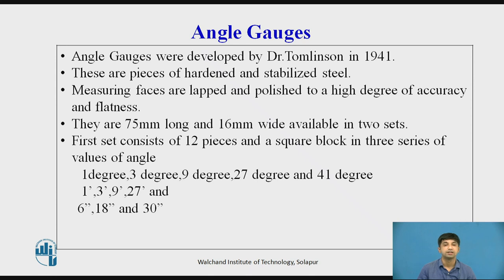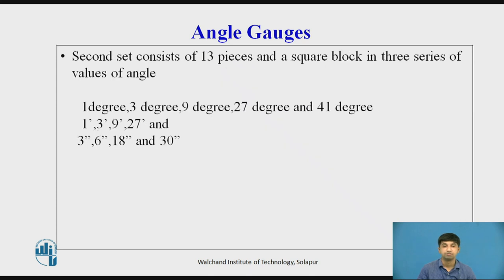Second set consists of 13 pieces and a square block in 3 series of values of angle: 1 degree, 3 degree, 9 degree, 27 degree and 41 degree; 1 minute, 3 minute, 9 minute, 27 minute; and 3 seconds, 6 seconds, 18 seconds and 30 seconds.